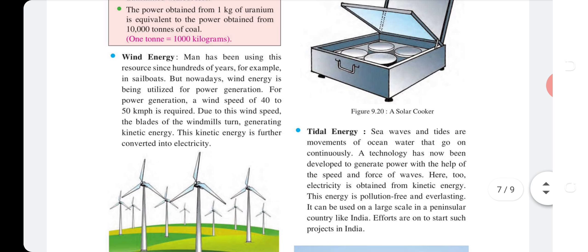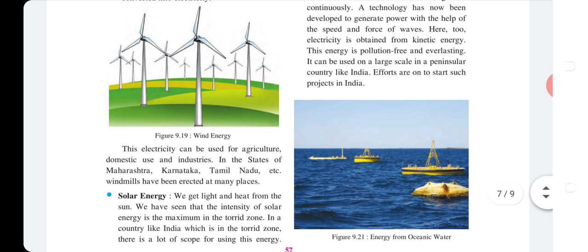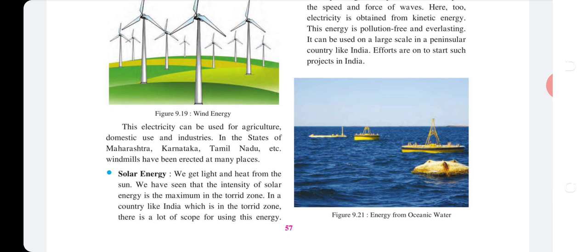Wind energy: Man has been using wind energy for hundreds of years — for example, in sailboats. Nowadays, wind energy is utilized in power generation. A wind speed of 40 to 50 km per hour is used to turn the blades of a windmill, generating kinetic energy, which is further converted into electricity. This electricity can be used for agriculture, domestic use, and industrial use.